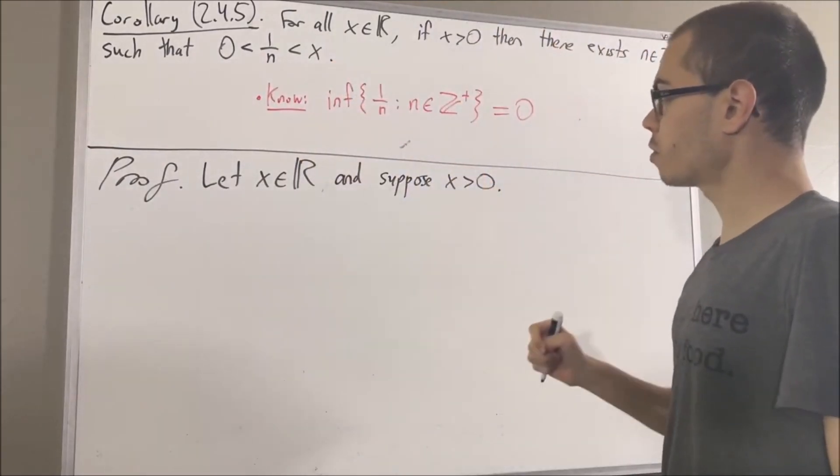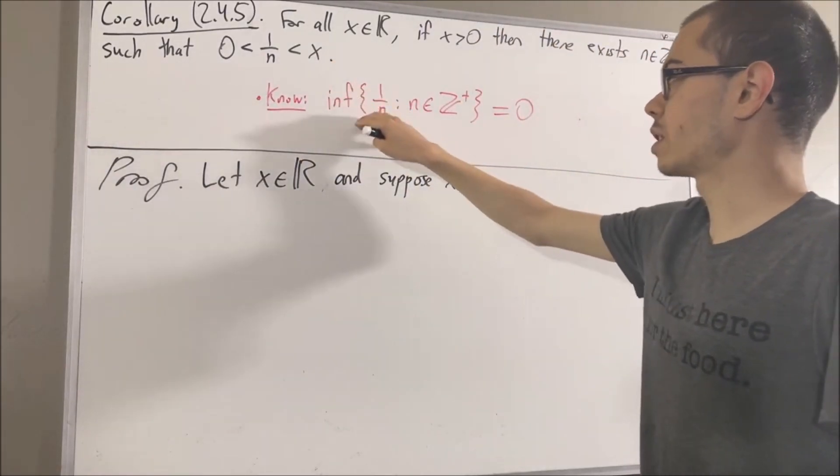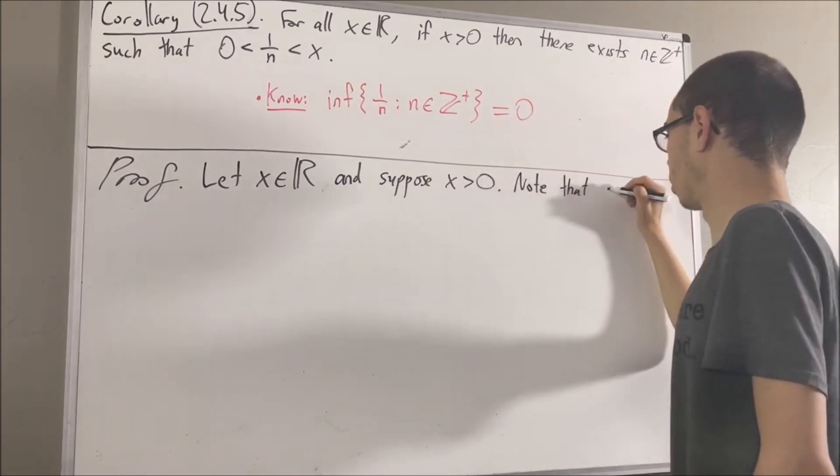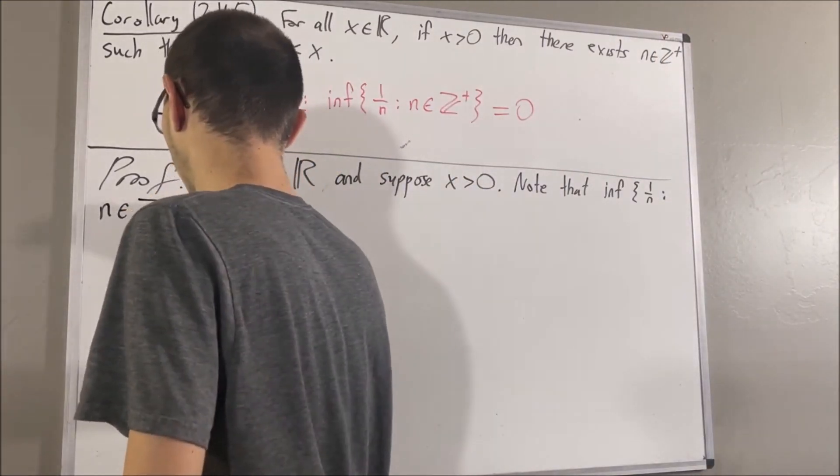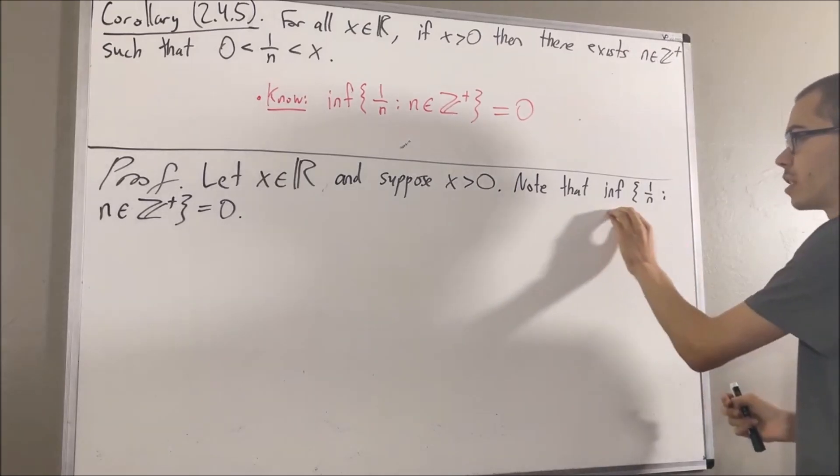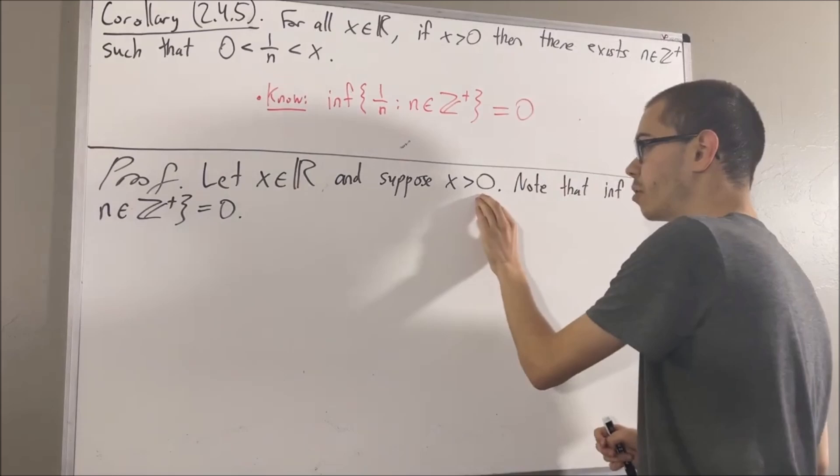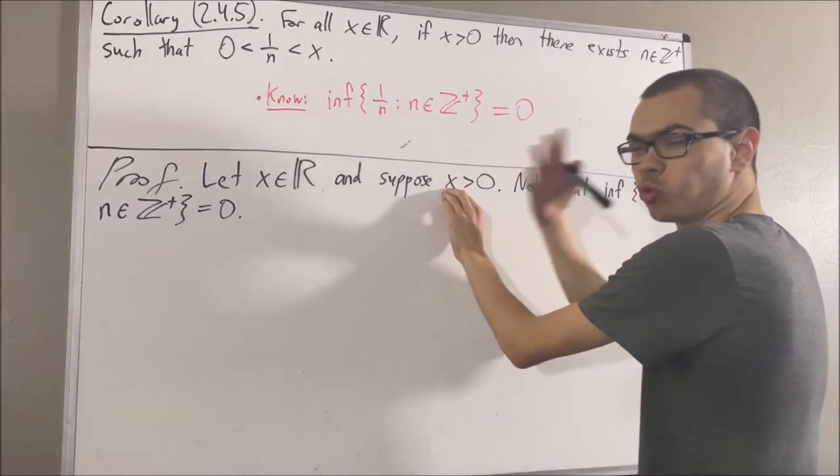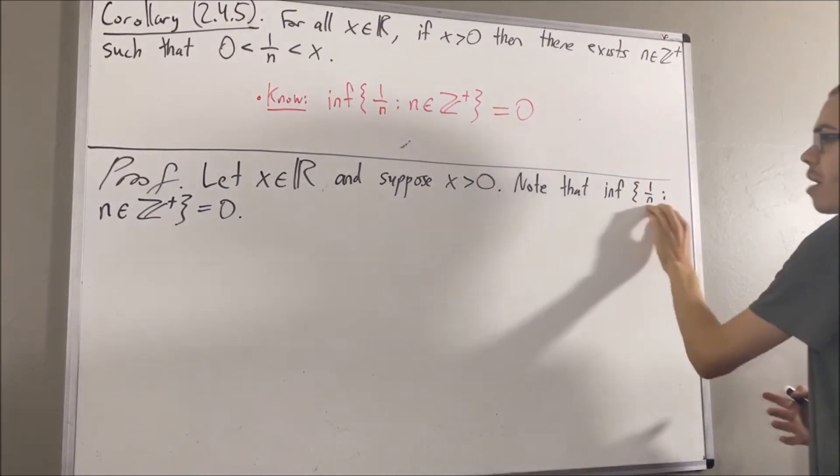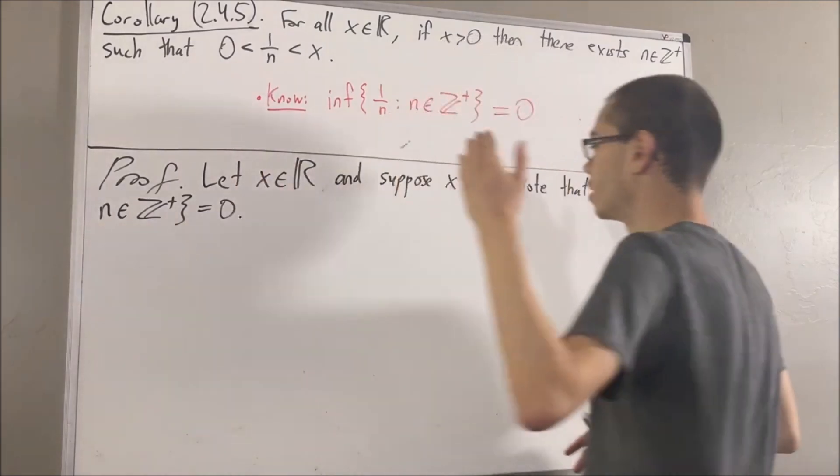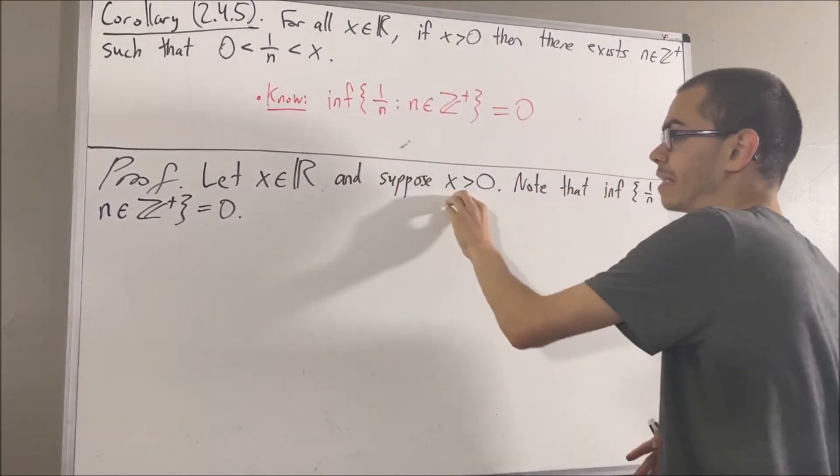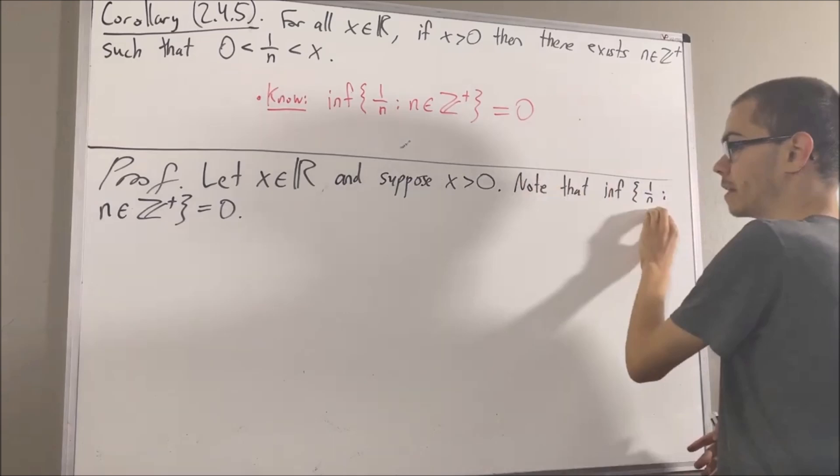Now let's first note that the greatest lower bound of this set is zero. And since the greatest lower bound of this set is zero, and x is greater than zero, this means that x is greater than the greatest lower bound of this set. So this means that x cannot be a lower bound of this set.